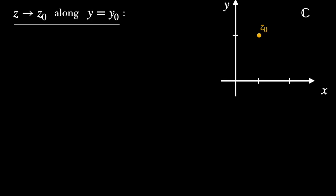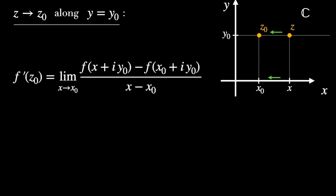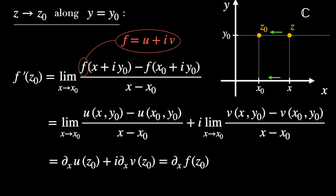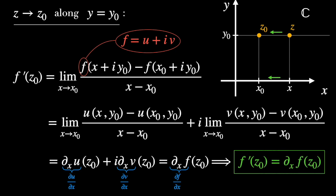Since we have this freedom, let's firstly approximate z zero along the horizontal line y equals y zero. Using the definition of the derivative, we get this limit for x that tends to x zero, as we see in the graph. Notice that f can be written as u plus iv, so we can break the limit into a real part and an imaginary part. But this is just the same as writing the partial derivative of the real part plus the partial derivative of the imaginary part, using compact notation. So the derivative of f at point z zero is just the partial derivative with respect to x of f at point z zero.